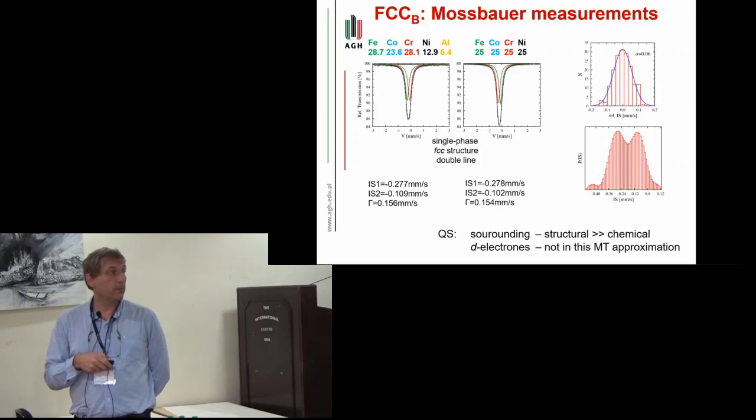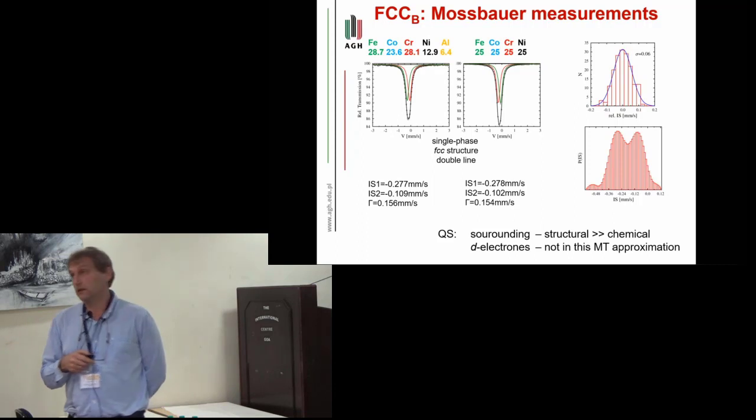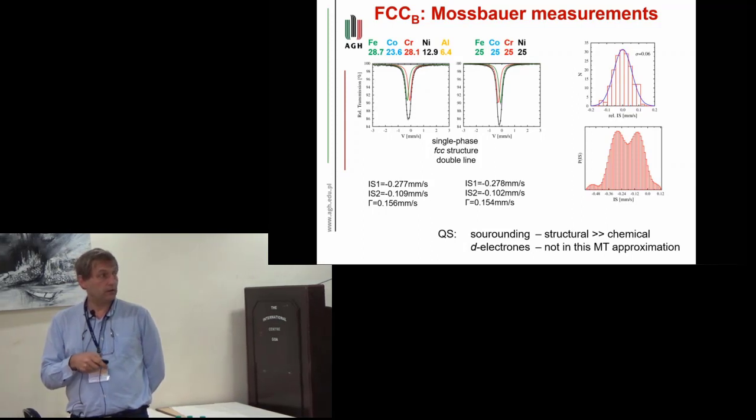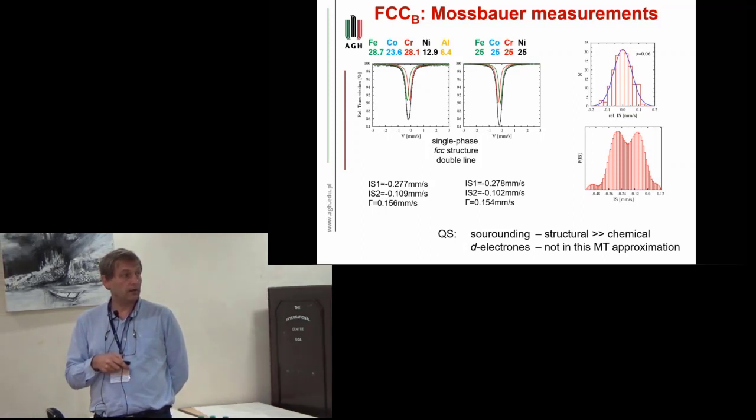For them, first we have calculated the isomer shifts and, in fact, the distribution of the isomer shift. It is shown on this picture. Here the sigma for this distribution is 0.06 millimeter per second.